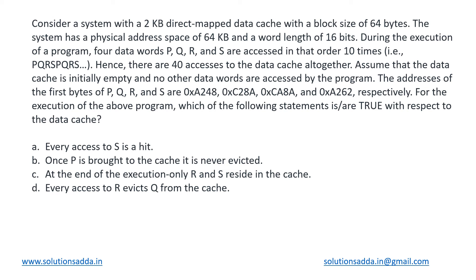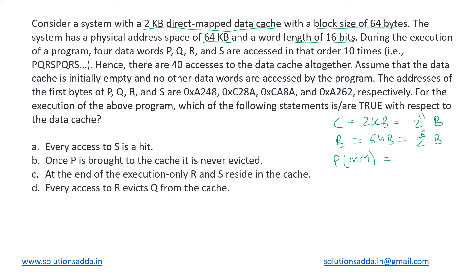From the cache organization, we have been given a 2KB direct mapped cache with a block size of 64 bytes. The system has a physical address space of 64KB and a word length of 16 bits. Let us note down these things: the cache size is 2 kilobytes which is 2 to the power 11 bytes, the block size is 64 bytes which is 2 to the power 6 bytes, and the physical address space is 64KB which is 2 to the power 16 bytes.